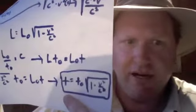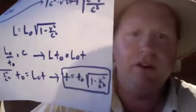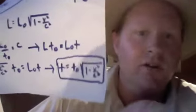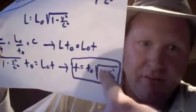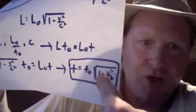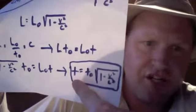Well, Alpha Centauri is 4.3 light years, so it'll take us 17.2 years to go to and fro from our standpoint. That's the T sub O would be 17.2. But the actual time experienced on board the rocket ship would be less.